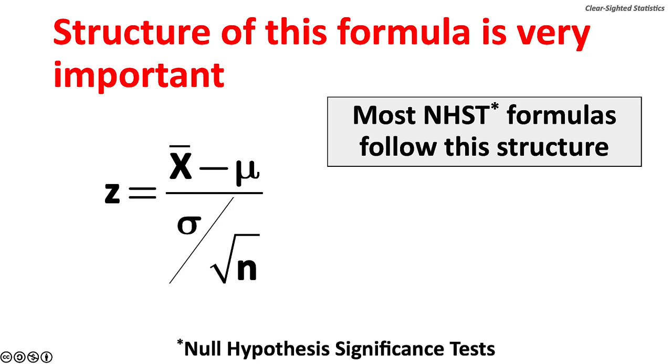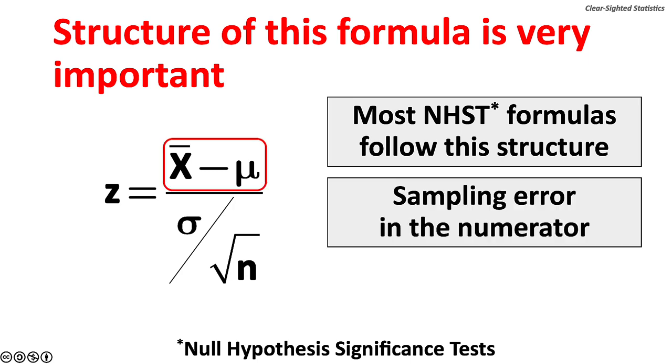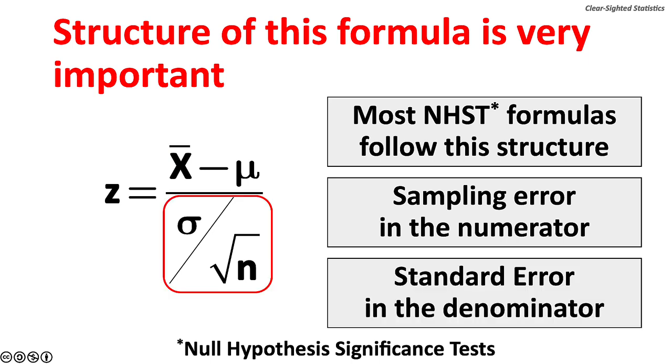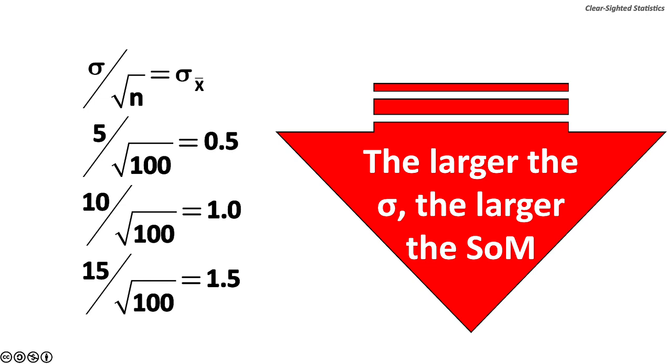and the population standard deviation sigma over the square root of n is the standard error of the mean. As we shall see in future lectures, most null hypothesis significance test formulas follow this structure. The sampling error is in the numerator, and the standard error is in the denominator.